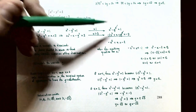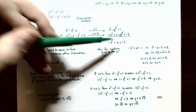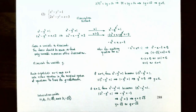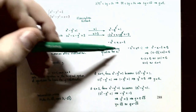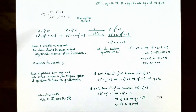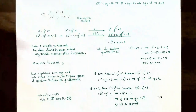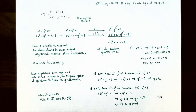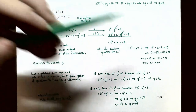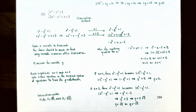Rearranging: x² − x − 2 = 0. Factor by finding numbers that multiply to −2 and add to −1: those are −2 and 1. So (x − 2)(x + 1) = 0, giving x = 2 or x = −1. Back-substitute into x² − y² = 1. When x = −1: 1 − y² = 1, so y = 0. When x = 2: 4 − y² = 1, so y² = 3, giving y = ±√3.